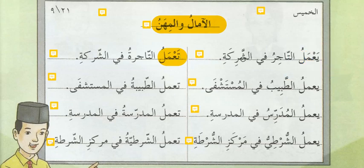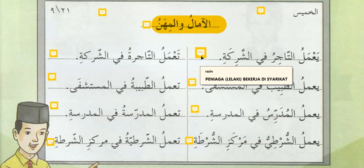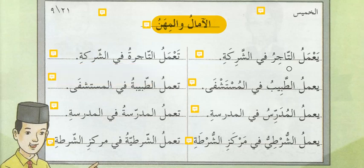Seterusnya kita tengok pada 'Atajiru' — untuk muzakar tidak ada huruf Ta' ta'nis ta' marbutah di belakangnya: Atajiru. Untuk perempuan mu'annas ada ta' marbutah di belakangnya: Atajiratu. Maksud ayat tersebut adalah peniaga lelaki bekerja di syarikat. Untuk perempuan, peniaga perempuan bekerja di syarikat. Kamu ulang bacaan tersebut kemudian salin dalam buku latihan Bahasa Arab — tulisan mesti cantik seperti dalam teks, mesti tulis atas garisan.